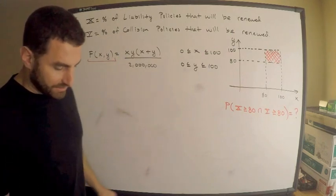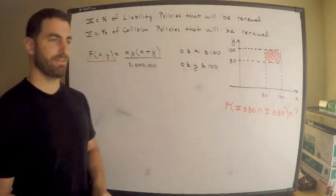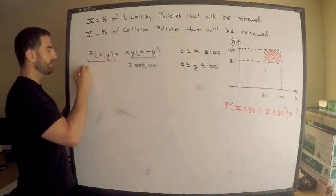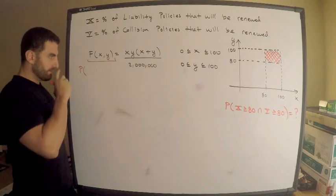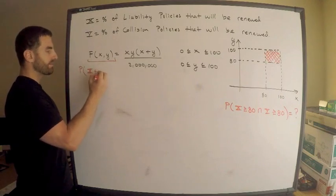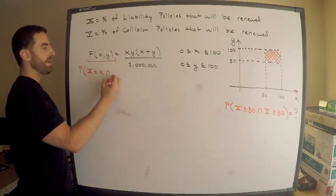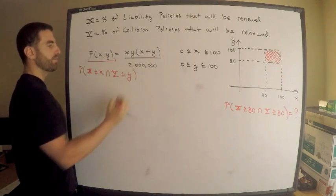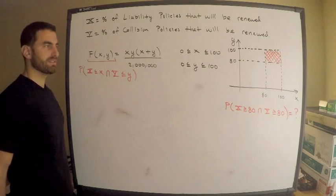What does the joint CDF actually mean? Well, remember from definition, and we have to know definitions, right? It's the probability that my random variable X is less than little x and my random variable Y is less than little y. This is the definition of the joint CDF.